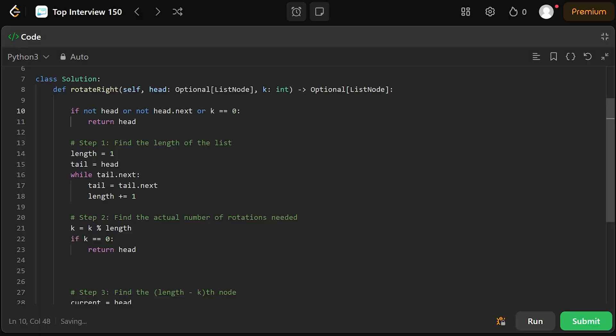In the code, we first check if the list has only one element, or if it's empty, or if k is 0. In any of these cases, we simply return the head of the list without any changes.